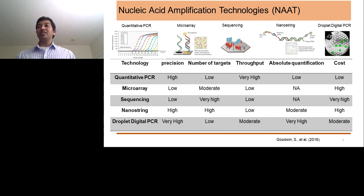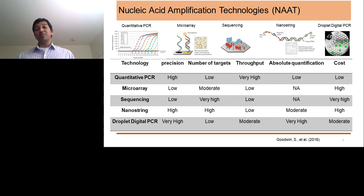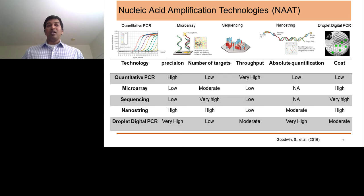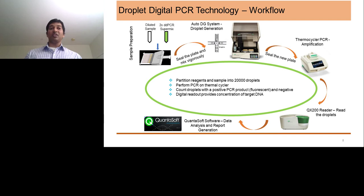For absolute quantification, Digital Droplet PCR has a very high advantage because it doesn't depend on any standard curve, whereas qPCR depends on a standard curve so variability is higher. For cost, qPCR is the lowest, Digital Droplet PCR is moderate, and the other three technologies are very high. Taking all these parameters into consideration, I want to introduce how the workflow can happen for a Digital Droplet PCR.